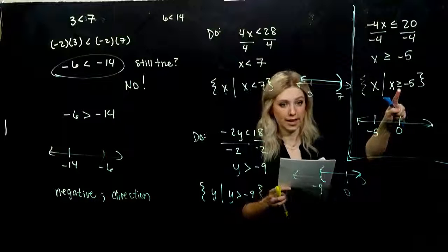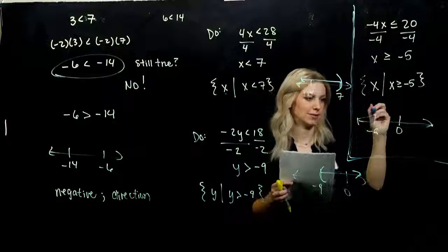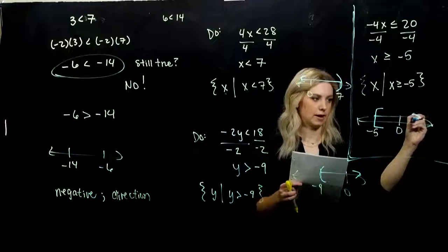Closed. Since we can have it exactly equal to minus 5. Going in which direction? Positive, since I want anything greater than that.